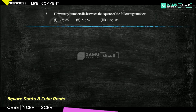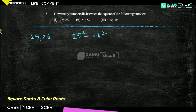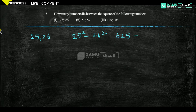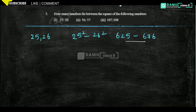Our fifth question is: how many numbers lie between the squares of the following numbers? First one is 25 and 26. The squares of these numbers are 25² = 625 and 26² = 676. In between those, how many numbers are there? 676 minus 625 minus 1 gives us 50. So 50 numbers are there — that is the answer.